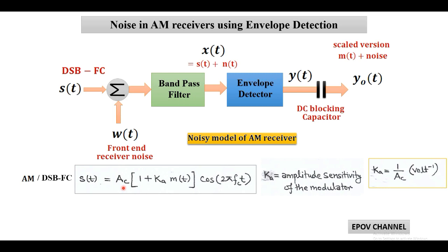Since in practice the carrier amplitude is typically measured in volts, the unit of amplitude sensitivity KA is volt inverse.